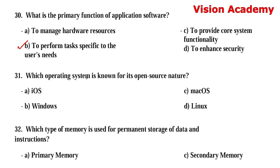Question 31: Which operating system is known for its open source nature? Option A: iOS. Option B: Windows. Option C: macOS. Option D: Linux. Option D, Linux, is the right answer.